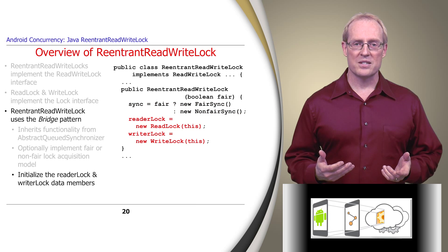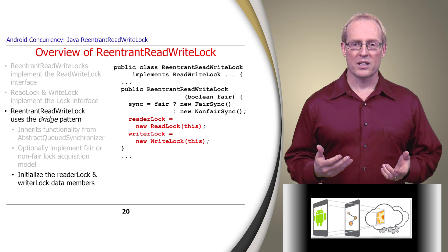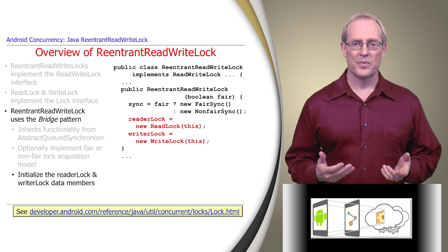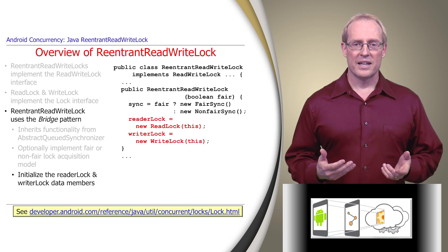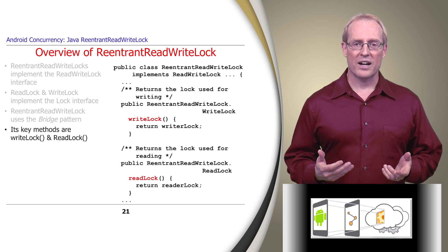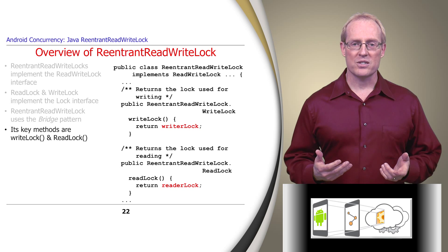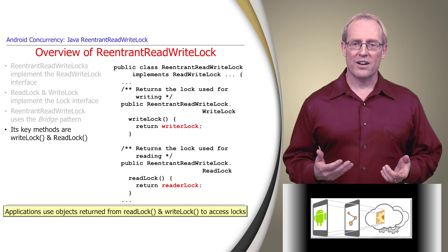Its constructor also initializes the ReaderLock and WriterLock data members that implement the lock interface, and thus support the standard lock and unlock methods covered in the ReentrantLock video. The key methods in ReentrantReadWriteLock are the readLock and writeLock accessor methods that return the underlying ReaderLock and WriterLock objects initialized in its constructor, which are used to acquire the lock for reading and writing, respectively.